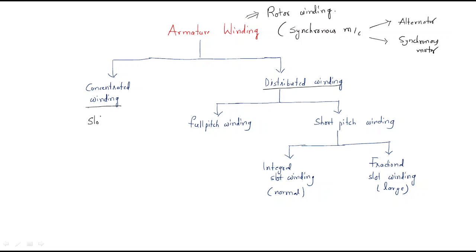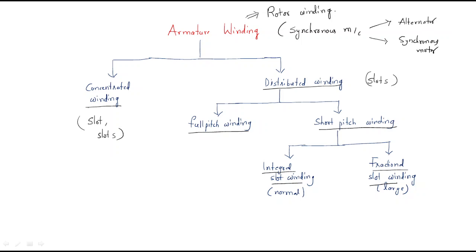Concentrated winding means it is located in one slot or some of the slots — only that part uses the winding. In distributed winding, we cover all the slots. The distributed winding is further of two types: one is full pitch winding and another one is short pitch winding. Short pitch winding is again two types: integral slot winding and fractional slot winding. Integral slot winding is called the normal winding, and fractional slot winding is called the chord winding.